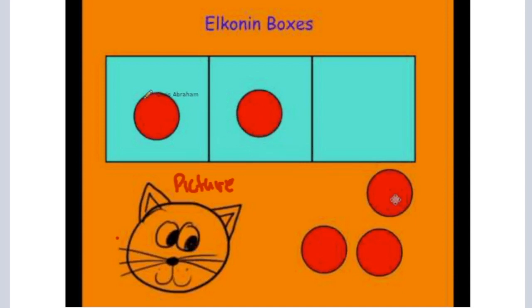They wouldn't have to write down that it's made up of a C, an A, a T, because that would be phonics. That would be matching up the sounds with letters and letter sound correspondence. But this is just matching up the sounds that they hear in oral language in the word cat.